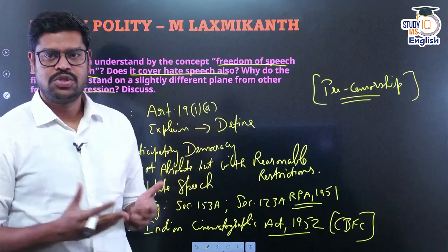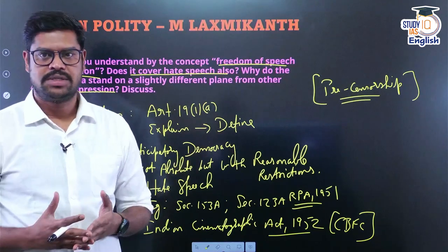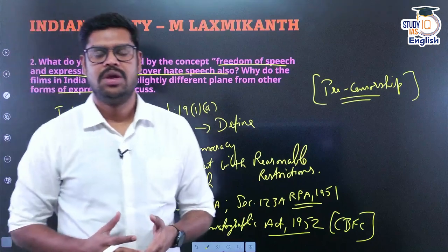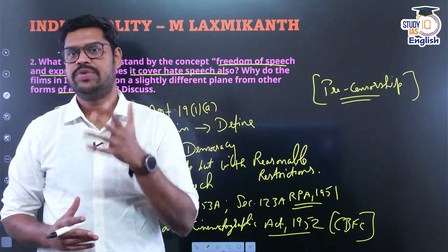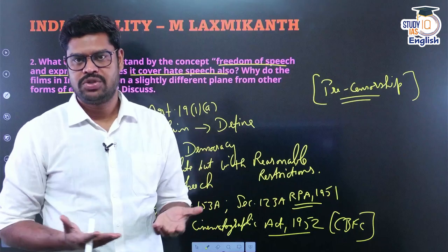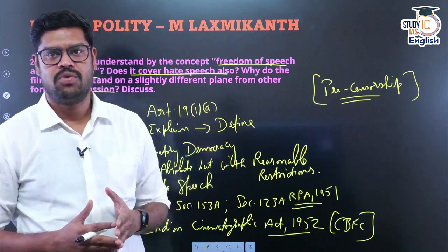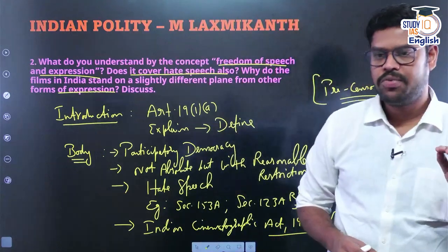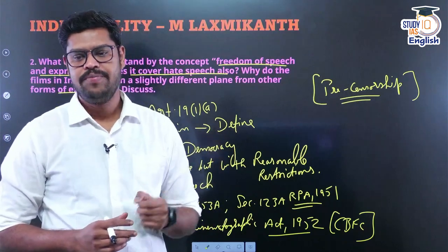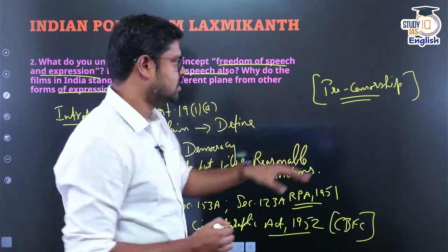Pre-censorship is exactly what makes films stand on a different plane from other forms of communication. If someone publishes an article in a newspaper or publishes a book, they are not pre-censored — bans can be imposed after publication. But pre-censorship happens only for movies. Why? Because of the reach to the masses — not everybody reads a book, but everybody can watch a movie. People model actors and actresses, and the message conveyed through movies can be very persuasive and have a behavioral impact.